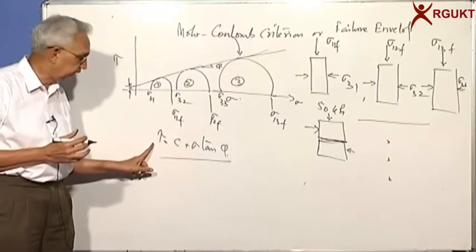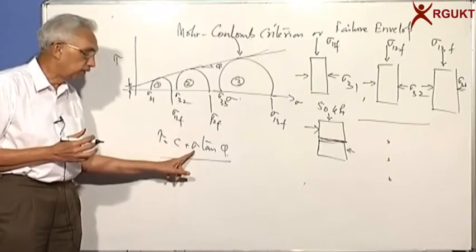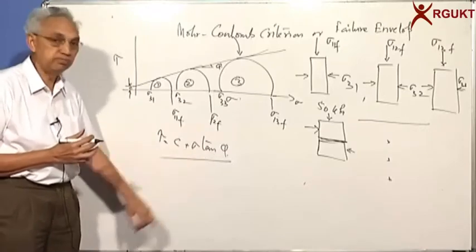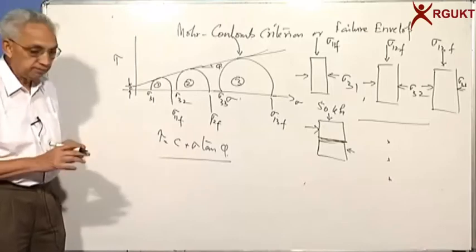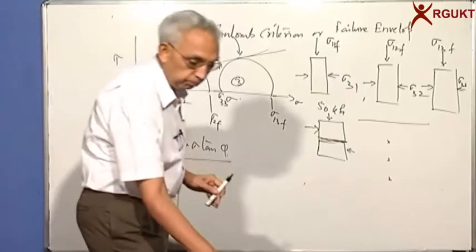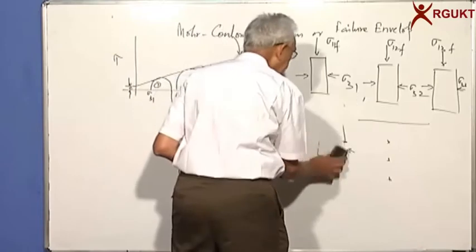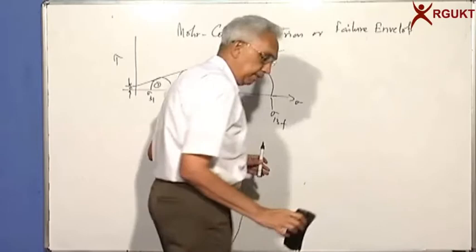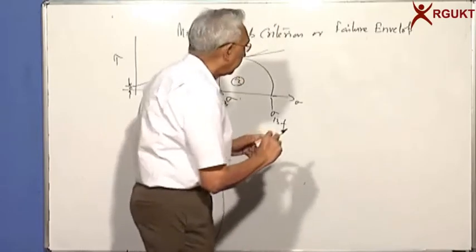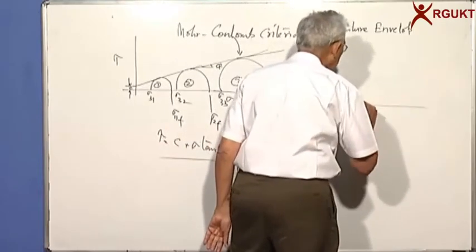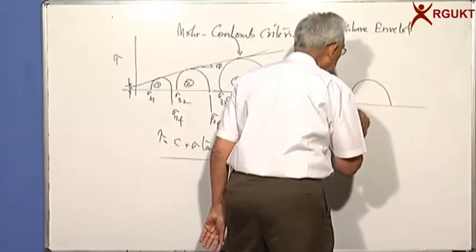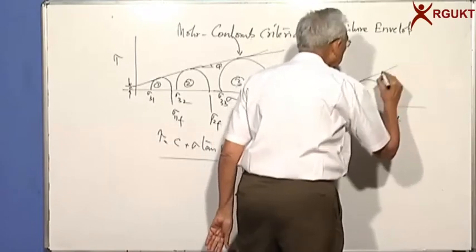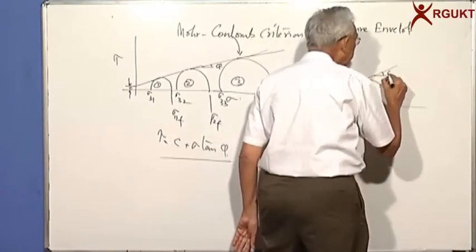The Mohr-Coulomb criterion can be expressed using Mohr circles. Earlier, we looked at simple shear of two blocks of soil under a given normal stress along a predetermined failure plane. But here, we are looking at the state of stress in the ground by applying different lateral confining stresses and finding how much maximum stress can be applied so that the soil sample will fail. There is another, more convenient way to describe the same using principal stresses.